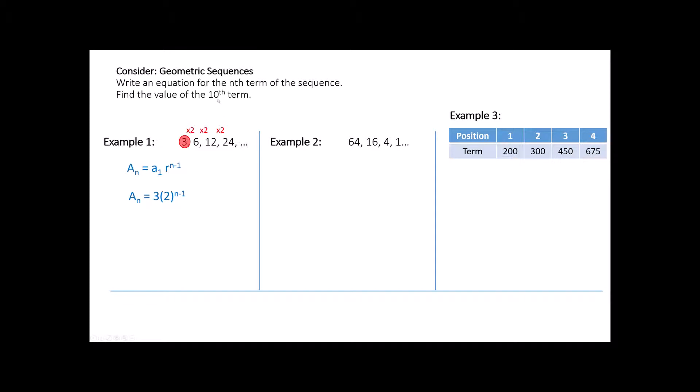This says take that 3 and keep multiplying by 2 n minus 1 times. Or in this case, for the 10th term, we would say if you want to know the value of the number in the 10th position, you're going to take the 3 and multiply it by 2 nine times. Because going from 1 to 2, 2 to 3, that's going to be 9 twos along the way. And from there, it's just straight calculation. That's not too bad, right?